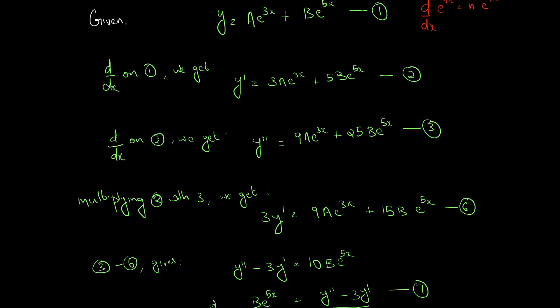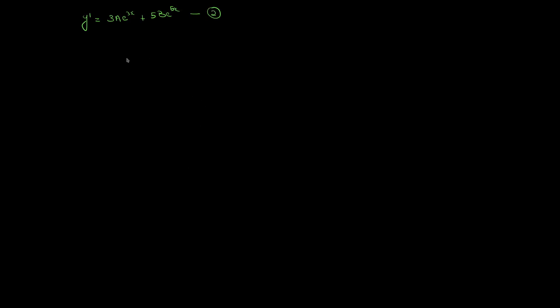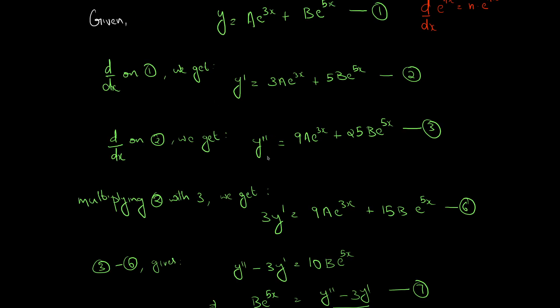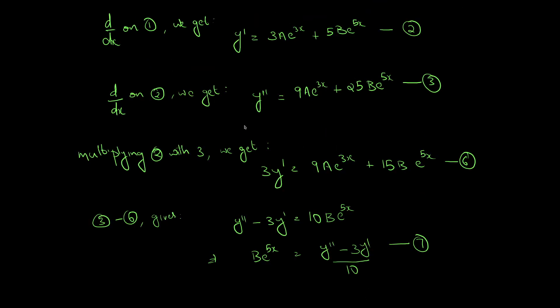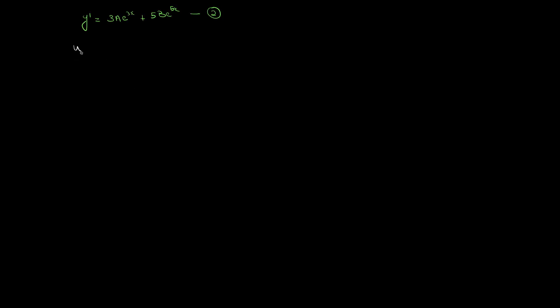Let this be equation 7. Now, from equation 2, we have b e raised to 5x expressed in terms of y dash and y double dash. We are now using equation 7 — that is, b e raised to 5x equals y double dash minus 3y dash by 10 — to substitute back.